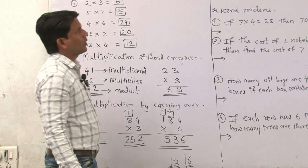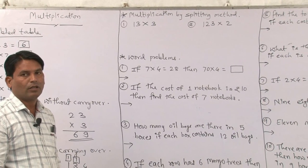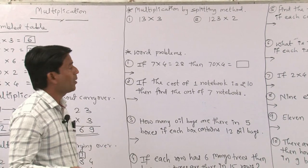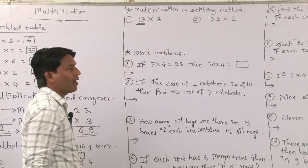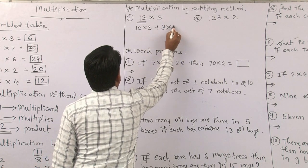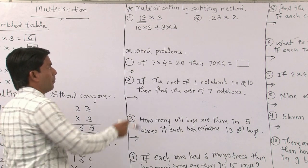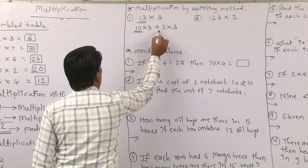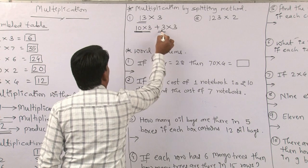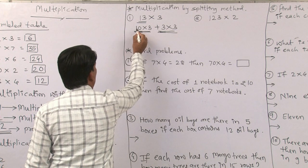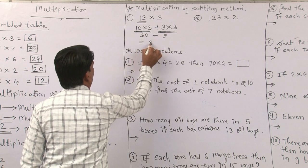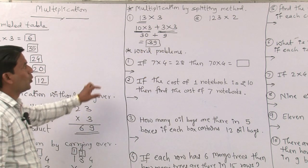After that we will learn multiplication by splitting method. We can solve multiplication by splitting. For example, 13 multiplied by 3: write 13 in expanded form as 10 plus 3. Then multiply: 10 multiplied by 3 plus 3 multiplied by 3, giving 30 plus 9 equals 39. This is the splitting method.